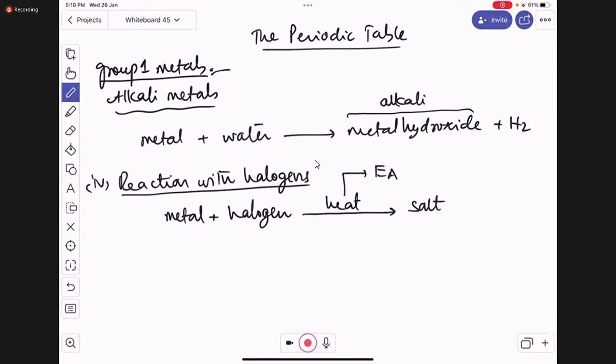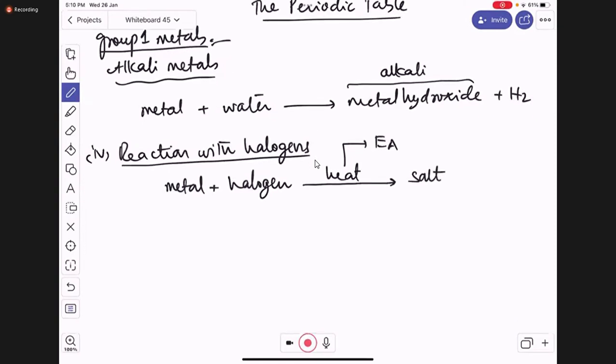It can be any group one metal, it can be any halogen of group seven, but this heat serves as energy of activation. If you don't give heat then the metal won't react because it doesn't have energy of activation. What is energy of activation? It is the minimum amount of energy required.